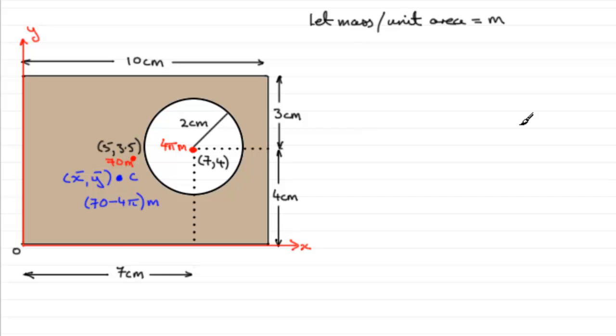We've got everything we need now to take moments about the x and y-axis. What we do is say that the total mass, which is going to be (70 - 4π)m, and if we take the moment of this about the x and y-axis, it is multiplied by (x̄, ȳ). That is equal to the moment of the whole rectangle, as if it's filled in, which will be 70m, the mass, multiplied by the position vector (5, 3.5).